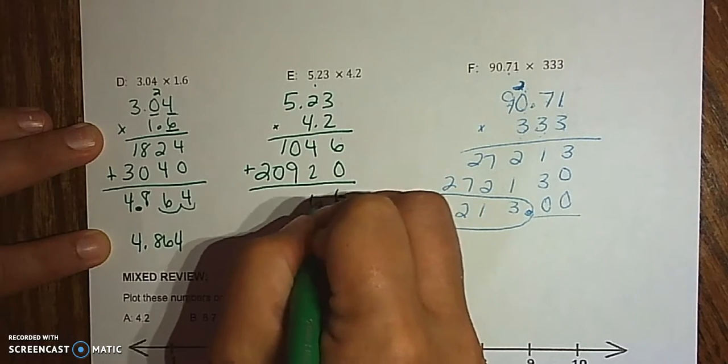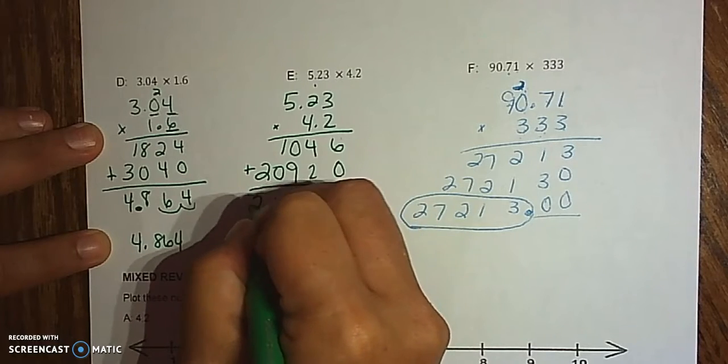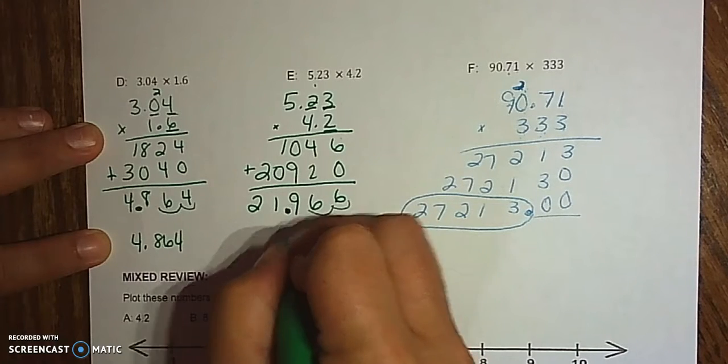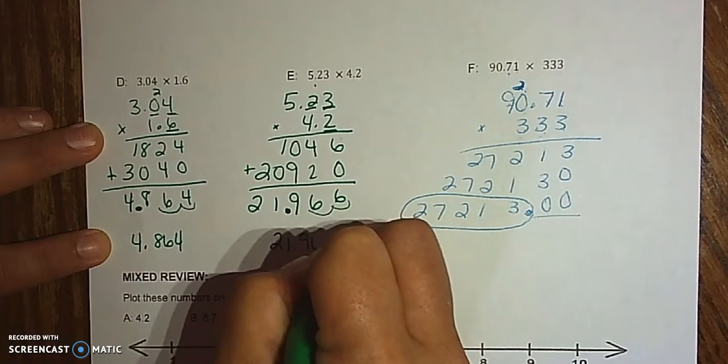Add those. 6, 6, 9, 1, 2. We've got 1, 2, 3 decimals. So 1, 2, 3 decimals. 21.966.